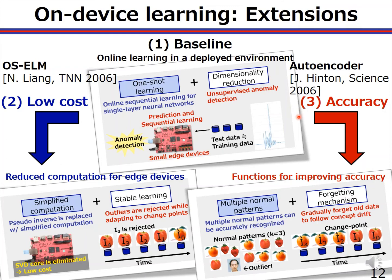This is an overview of the on-device learning algorithm proposed in this paper. As a baseline, one-shot learning and dimensionality reduction are used for online frequency learning and unsupervised anomaly detection. In order to reduce the computational cost for edge devices, the matrix inverse operation is replaced with reciprocal computation. A stable learning method is used to compensate for this simplified computation. Regarding accuracy, a forgetting mechanism is used, and multiple instances of the proposed on-device learning algorithm are used to maintain accuracy when multiple normal patterns exist.